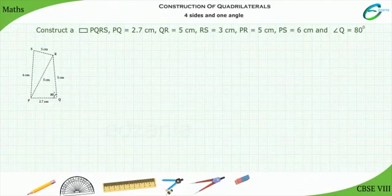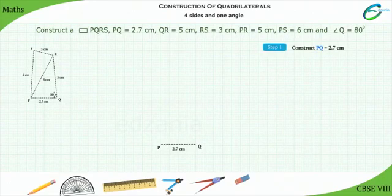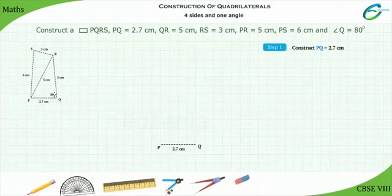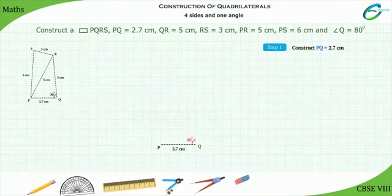Steps for Construction. Let us start with the base of the quadrilateral. Step 1: Construct the base PQ equal to 2.7 cm. We consider the base as PQ because angle Q is given.